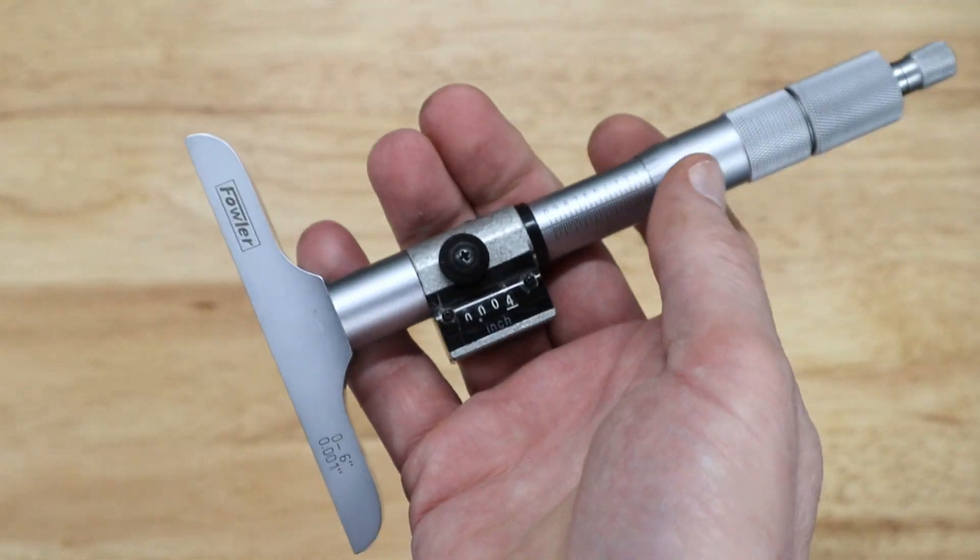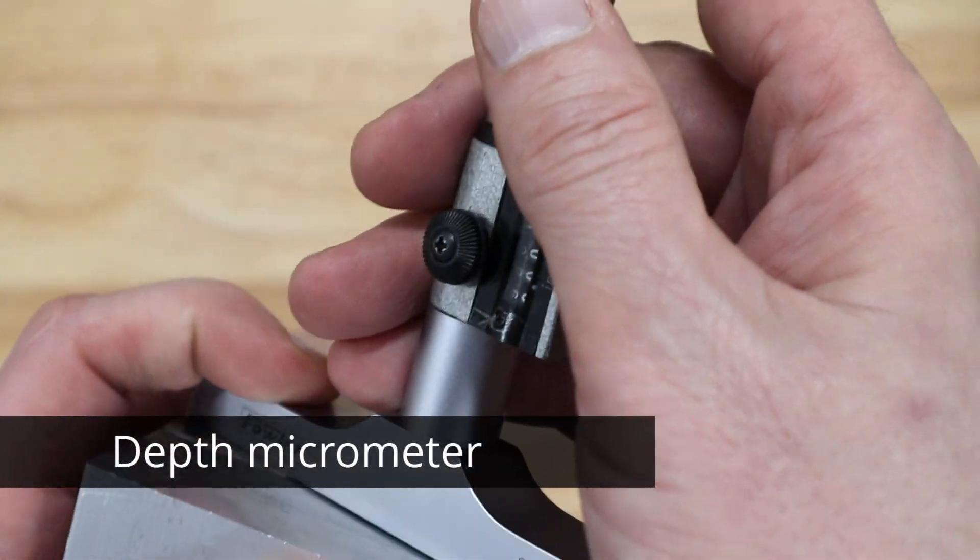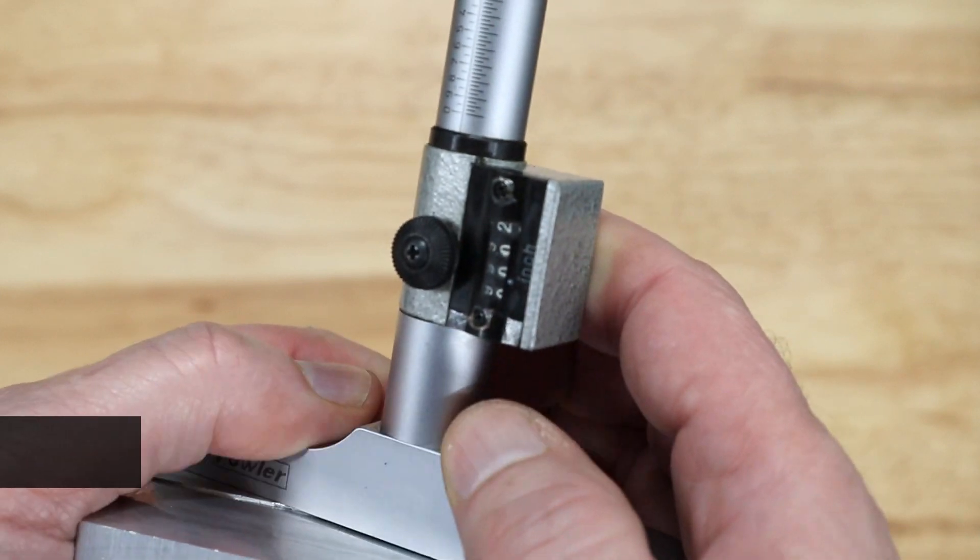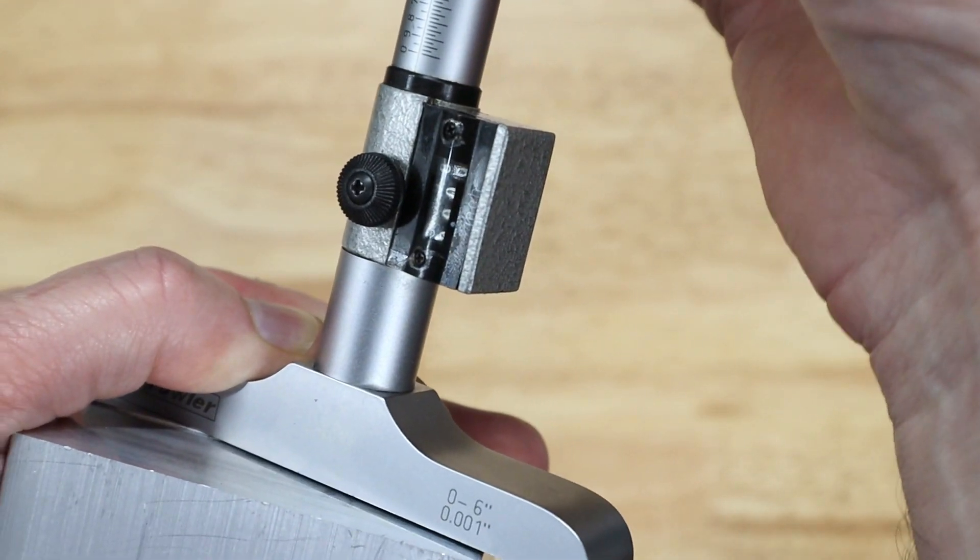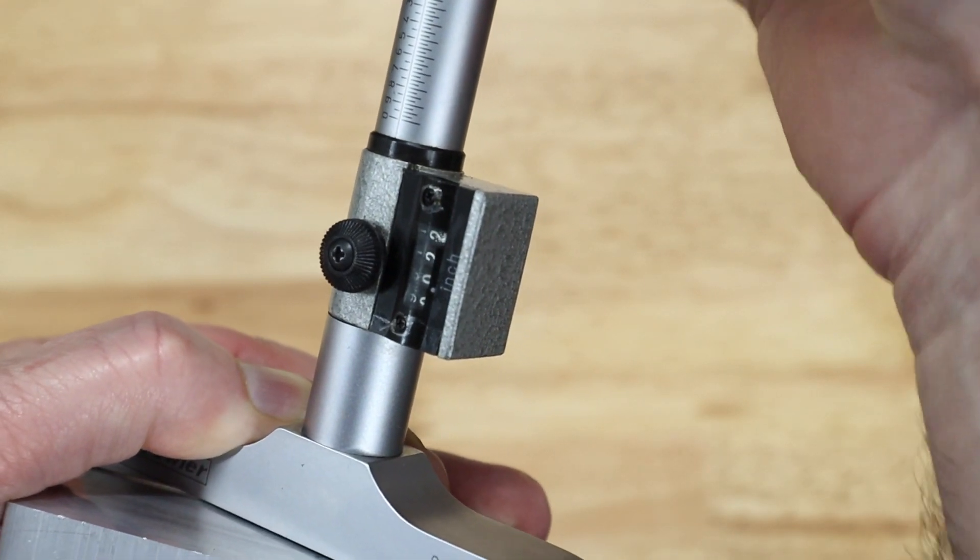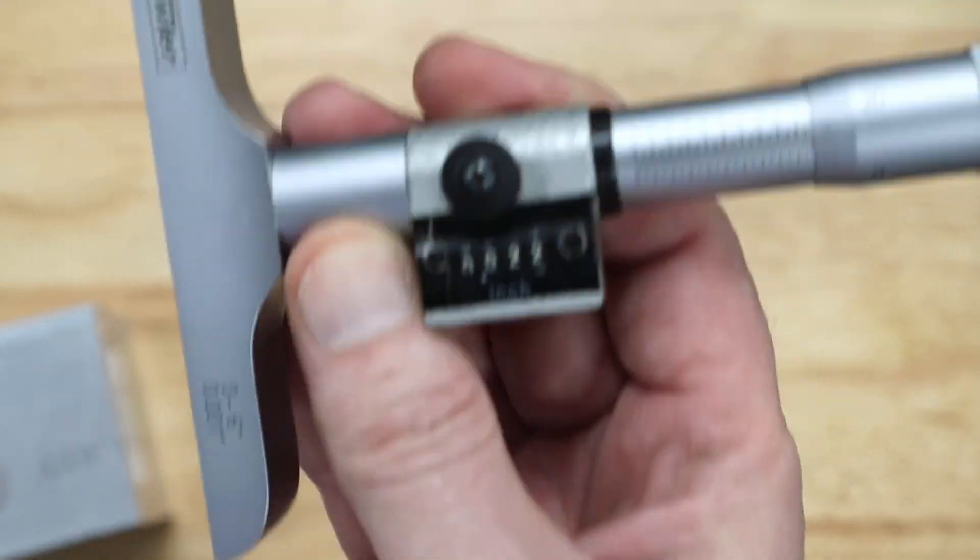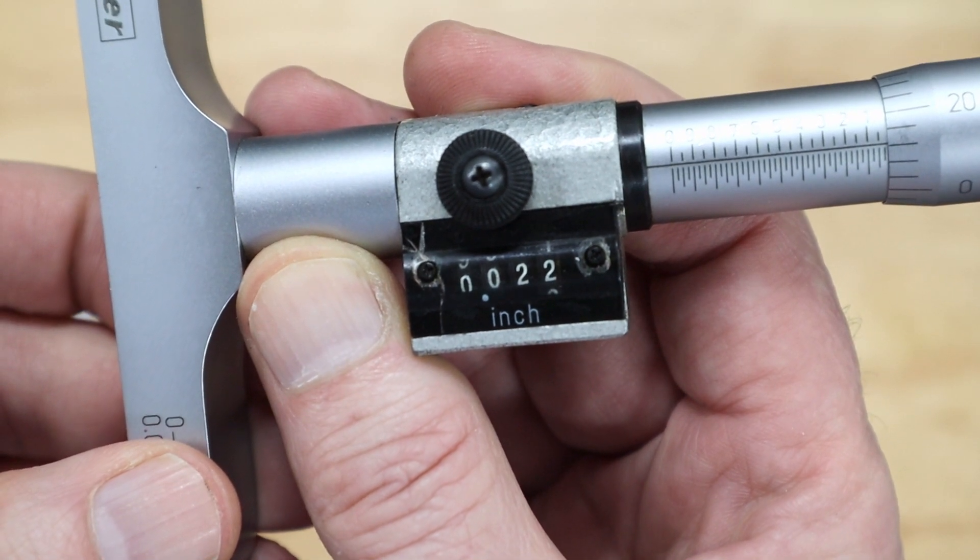I have this Fowler Digital Depth Finder. So I'm going to put it on here and try to get it so that it's held in place firmly. And then I'm going to turn the barrel. And let's have a look. So when we look, you can see that it's off by 22 thousandths of an inch.